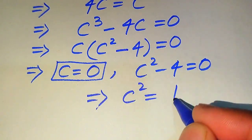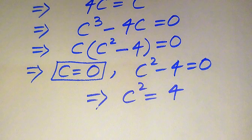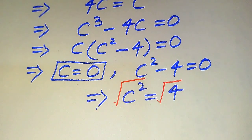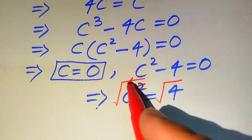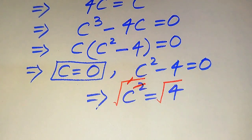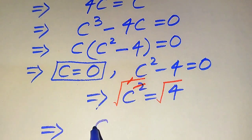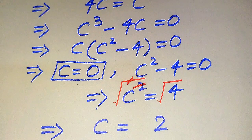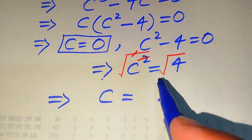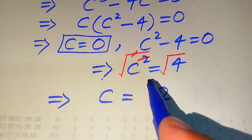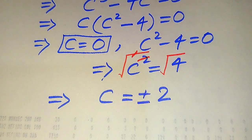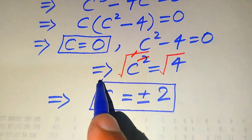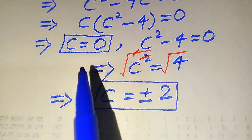We use the square root method. We move minus 4 to the right hand side, giving c squared equals 4. Taking the square root on both sides, the square root and the square cancel, and we get c equals plus or minus 2, since the square root of 4 is 2. So we have a total of three roots from the first method.